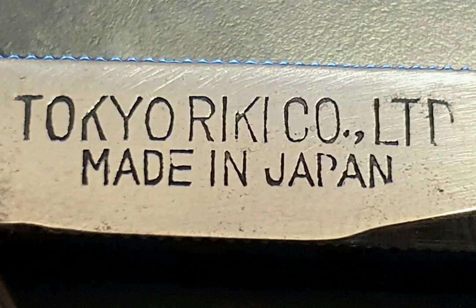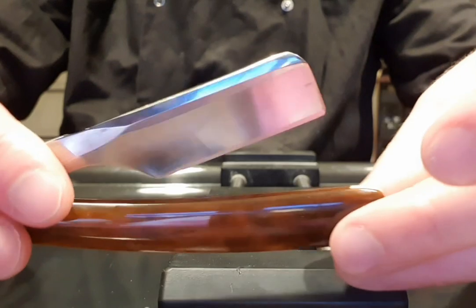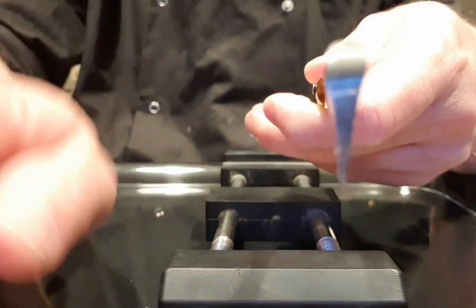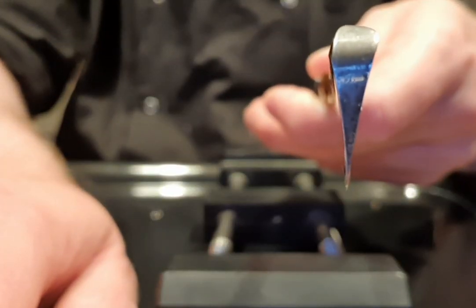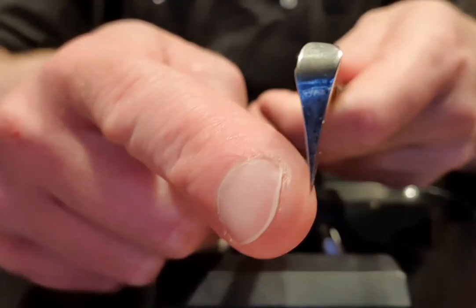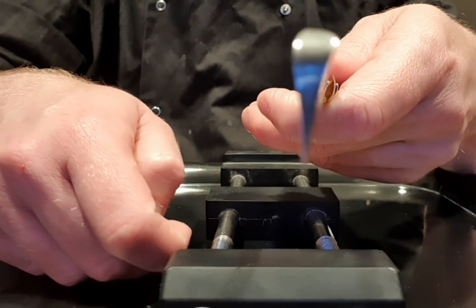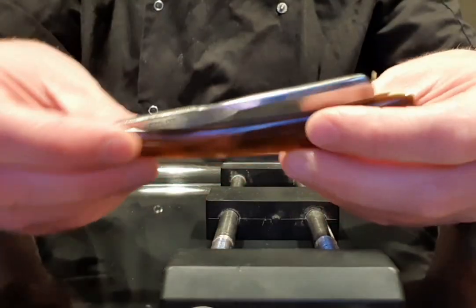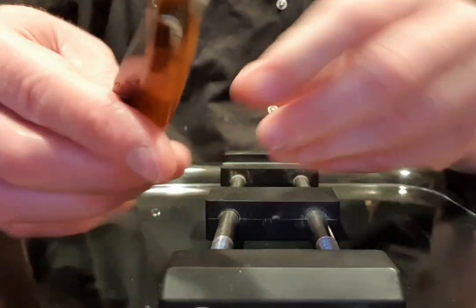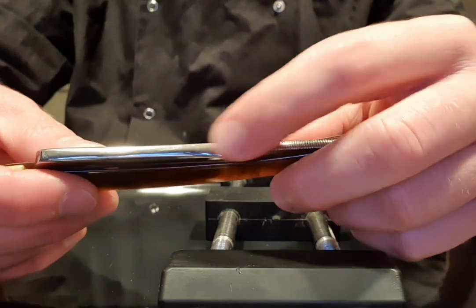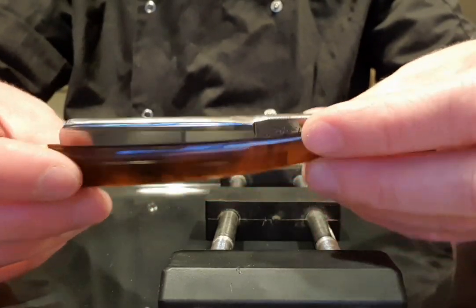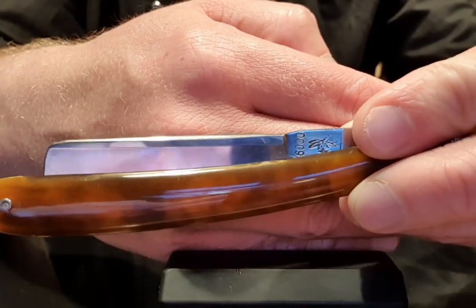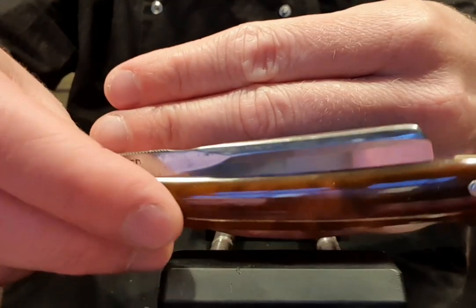One thing I noticed, although it's a Kamisori, looking at the way the spine has been ground, it seems the previous owner has honed it the same way as a Western European razor, on both sides of the bevel. Usually a Kamisori will be mainly honed on one side and almost nothing on the other one.